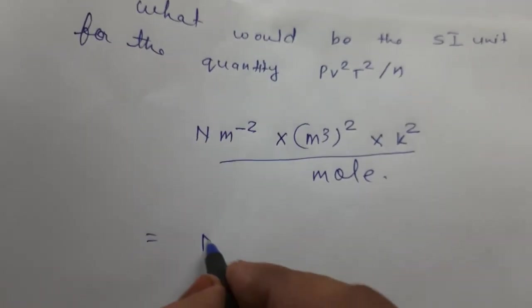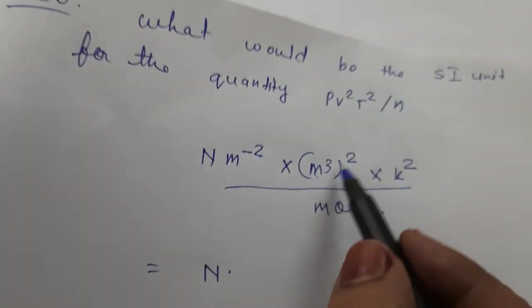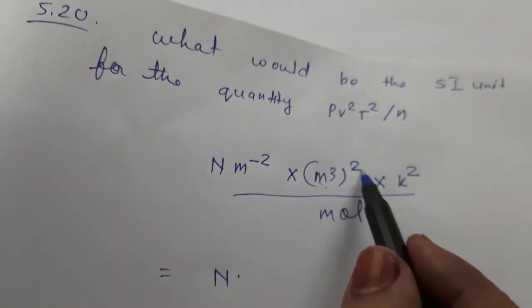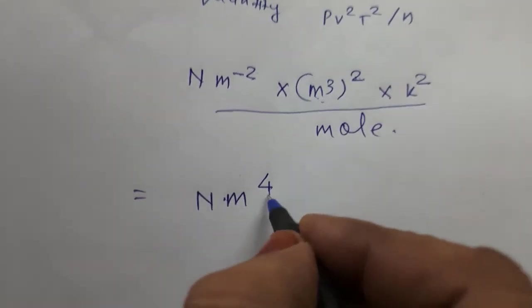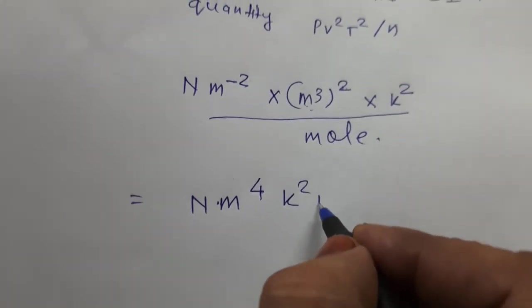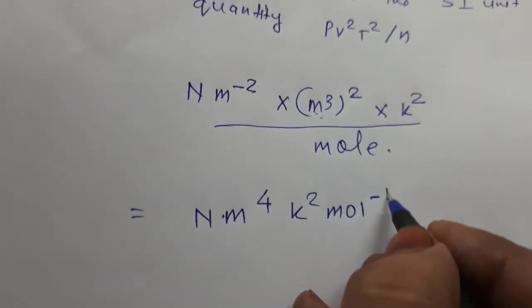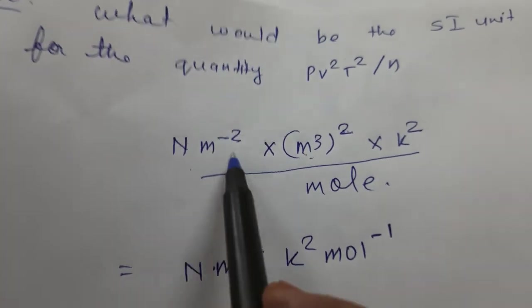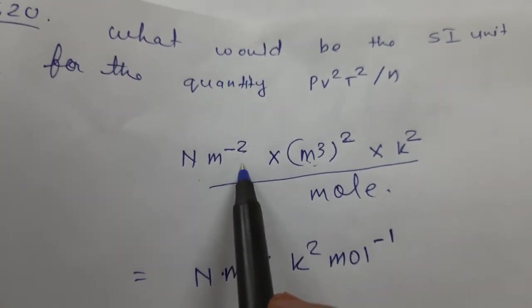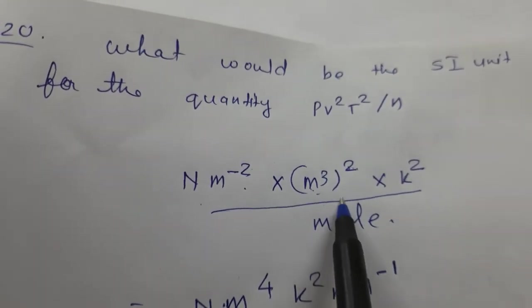Now we will write: Newton - see, 2 times 3 is 6, meter raised to 6, minus 2, plus 6 is 4. Newton meter to the power 4, Kelvin square, mole inverse. For P, newton per meter square is newton meter raised to minus 2. For volume, meter cube.